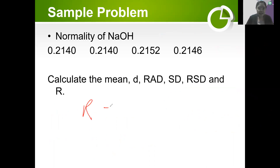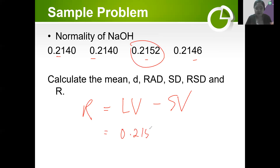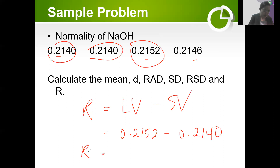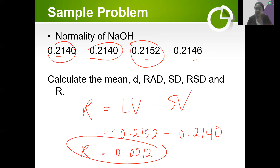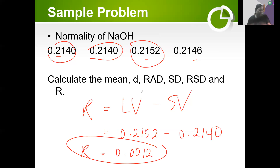Lastly, for the range: it's just the largest value minus the smallest value. Looking at the data, the largest is 0.2152 and the smallest is 0.2140. So the range is 0.2152 minus 0.2140 equals 0.0012. A small range also means our data are not far from each other — the highest and lowest values are close to each other.